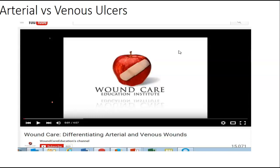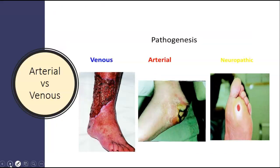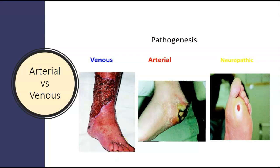There's a video about the difference between arterial and venous ulcers and wound care. Looking at the complications of arterial versus venous: venous issues are more about problems with blood return, arterial issues are about blood getting to the extremity, and neuropathy is when somebody can't feel and damage can occur — whether stepping on a nail, a piece of wood, or something that causes infection.